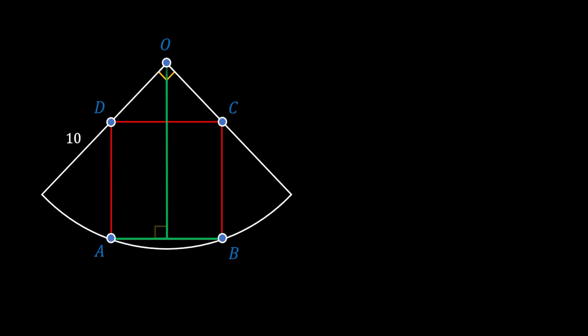We can pull the perpendicular bisector to the point O from the point P of the chord AB. The perpendicular bisector will divide the chord AB into two identical pieces. So if we mark the side of the square as A, that means that the line AP will be half of the side of our square — A over 2. Now let's take a look at the side BC. We can translate it to get the height of our square, also equal to A.